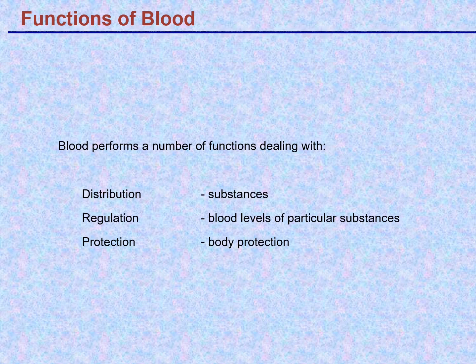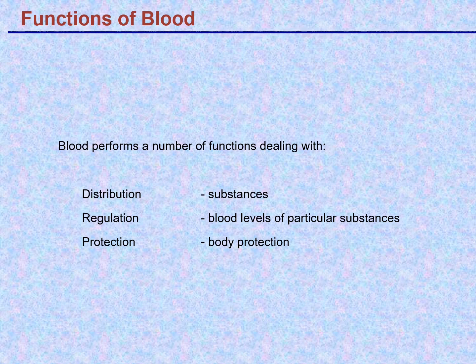Blood performs a number of vital functions, including distribution — it distributes throughout the body key substances required for normal metabolic and physiological function, including oxygen and nutrients. It's also involved in regulation through hormone distribution, and in protection in that it carries quite a few immune cells.